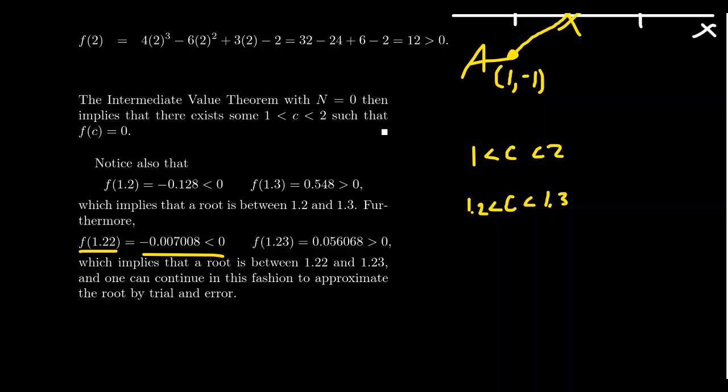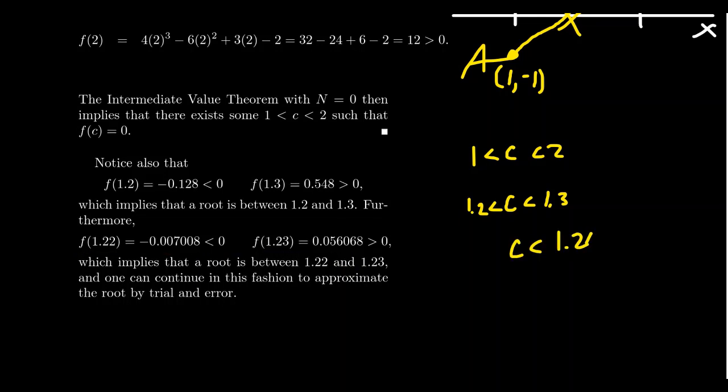So even doing better, we know c is between 1.22 and 1.23. And we could kind of start zeroing in on the root of this polynomial more and more. So by trial and error, we could approximate the solution as a consequence of the Intermediate Value Theorem.